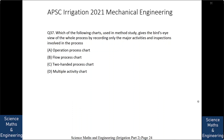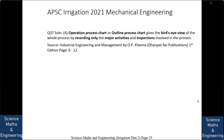Which of the following charts used in method study gives the bird's eye view of the whole process by recording only the major activities and inspections involved? (A) operation process chart, (B) flow process chart, (C) two-handed process chart, or (D) multiple activity chart. The answer is the operation process chart (also called outline process chart) gives the bird's eye view of the whole process by recording only the major activities and inspections.